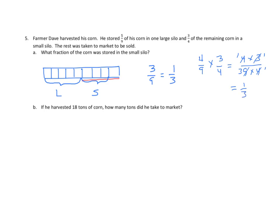If he harvested 18 tons of corn, how much did he take to market? Well, this last portion here is what he took to market. And that's one-ninth. One-ninth of 18 tons. So that's the same as one-ninth times 18, which is 18 over nine, which is two. He took two tons to the market.